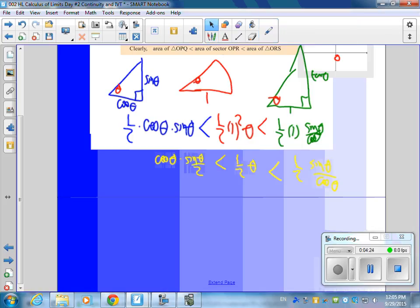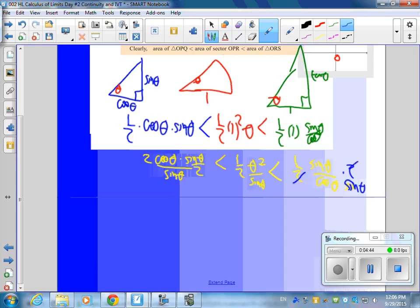I'm going to divide everything by sine theta, multiply by 2. Divided by sine theta, divided by sine theta, multiply by 2. Divided by sine theta, multiply by 2. And you'll notice that these all cancel.